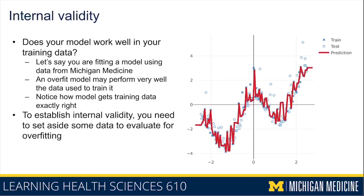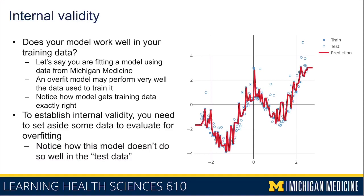So to establish that a model is internally valid, especially when that model has a capability to overfit, you have to set aside some data to evaluate for the presence of overfitting by comparing the training data to the test data, or by making sure there's some piece of data that the model hasn't seen that you're evaluating its performance on. In this case, something like a third or half the data was bucketed into this test dataset, which was never seen by the nearest neighbor model. When we measure the performance of this k-nearest neighbors model, we measure it in the test data, not in the training data.